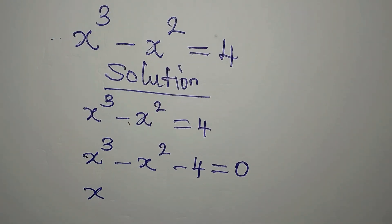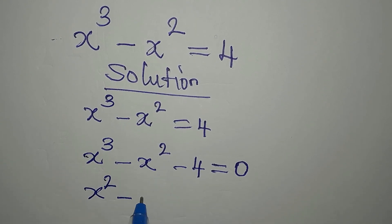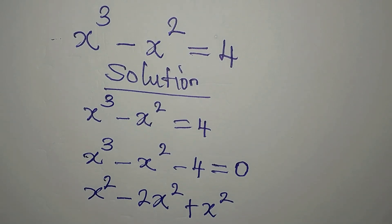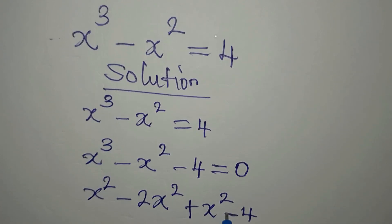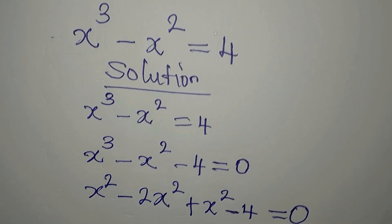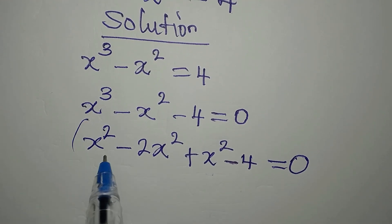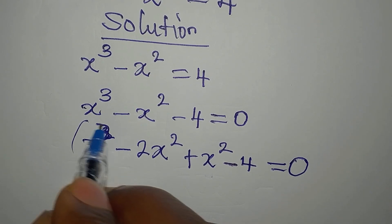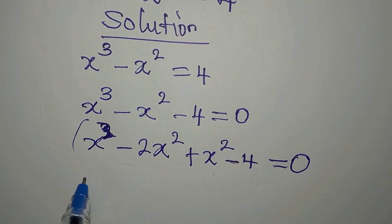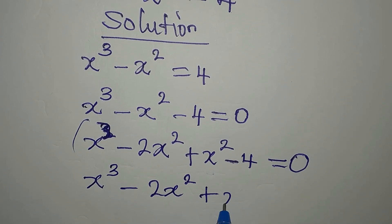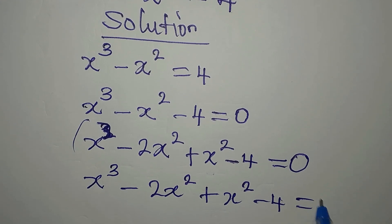To deal with this I have to break this middle term. I'm going to have x squared, and I want to have minus 2x squared plus x squared to stand for minus x squared. We still have minus 4, and everything equals 0. So we group: x to the power of 3 minus 2x squared plus x squared minus 4 equals 0.